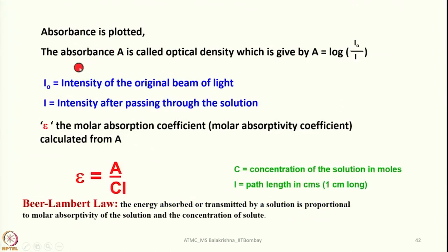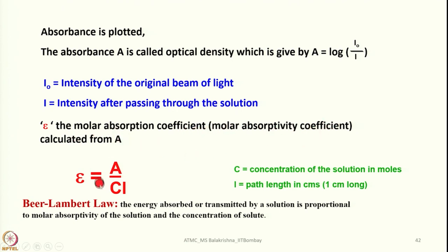The absorbance A, also called optical density, is given by A = log(I₀/I), where I₀ is the intensity of the original beam and I is the intensity after passing through the solution. The molar absorption (or molar absorptivity) coefficient ε is calculated from ε = A/(Cl), where C is the concentration in moles per liter and l is the path length in centimeters (usually 1 cm). This is Beer-Lambert's law: the amount of energy absorbed is proportional to the molar absorptivity and the concentration of the solute.